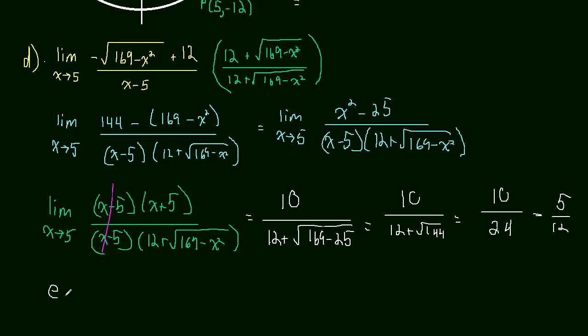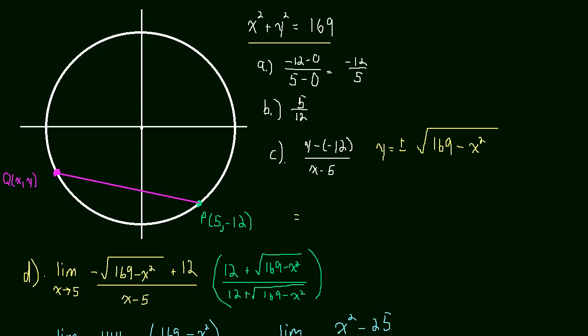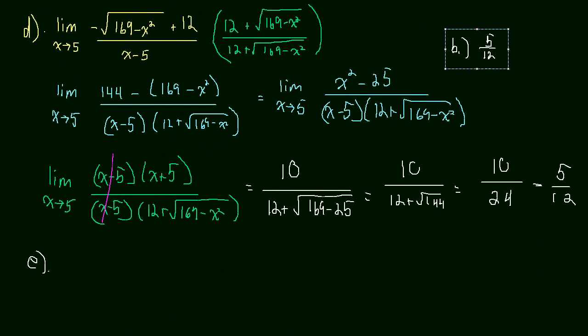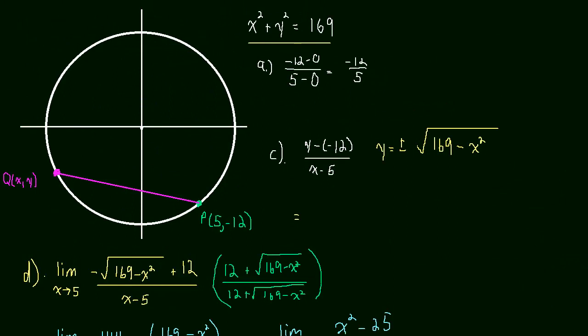And in the very last question, E, they say compare this, the answer for part D, 5 over 12, to your answer for part B. And part B, remember, was the slope of the tangent line. And it turns out that part B, the answer was 5 over 12. So this limit gave us the slope of the tangent line. And that's why I was trying to point out if this point is moving closer, you can see that the slope of the line connecting the two points is getting closer and closer to the slope of the tangent line.